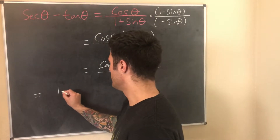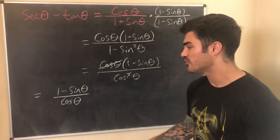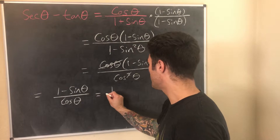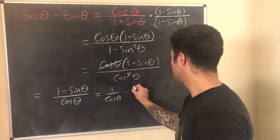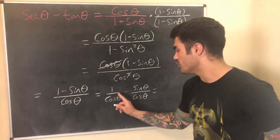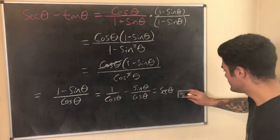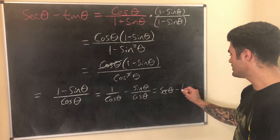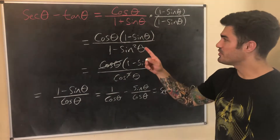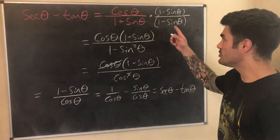We're left with (1 − sinθ) / cosθ. Since we have a single term in the denominator we can split this as 1/cosθ − sinθ/cosθ. Now we can apply identities directly: secθ = 1/cosθ and tanθ = sinθ/cosθ, giving us secθ − tanθ, which is exactly what we wanted. The conjugate trick works really well in examples like this with plus or minus one signs.